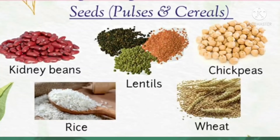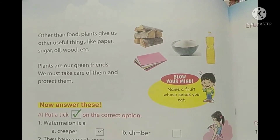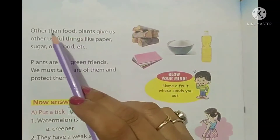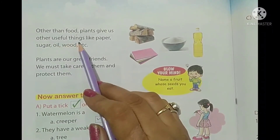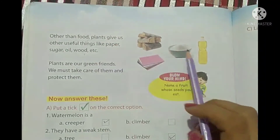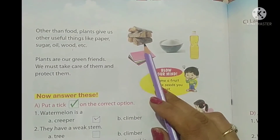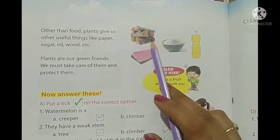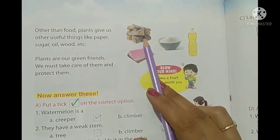Dear children, we have learnt the edible parts of plants. Now we are going to learn some other uses of plants. Other than food, plants give us useful things like paper, sugar, oil, wood, etc. You can see in this picture also — plants give us wood that helps us make furniture. In your classroom you can see the chair, table, and the outer corner of your blackboard, which is made of wood.